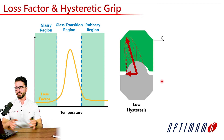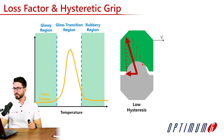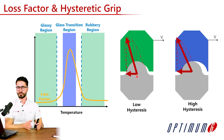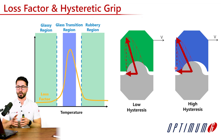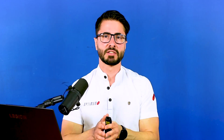Now let's discuss how the loss factor is heavily connected with hysteretic grip. If we're at very low temperatures or high temperatures, we have low energy loss and therefore low hysteresis. Because of that, we don't have such a large asymmetrical force distribution, and therefore we don't create as much lateral or longitudinal forces. Now, if we're close to the glass transition temperature, or we have a compound with more hysteresis, we generate a more asymmetrical force distribution, resulting in higher lateral or longitudinal force. This is how increasing the loss factor could also increase the hysteretic grip.